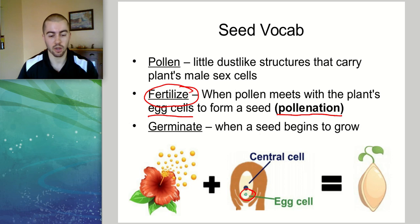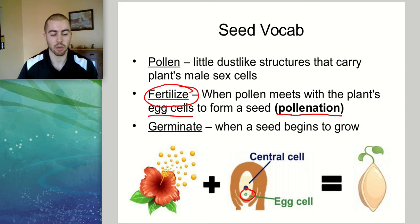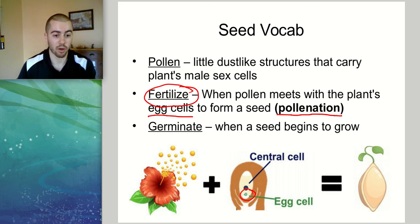If an egg cell is unfertilized, it can't grow into a seed. We need the pollen — the sperm cells from the pollen — to hit the egg cells in the female part of the plant, or in the case of a flower, a structure called a pistil.